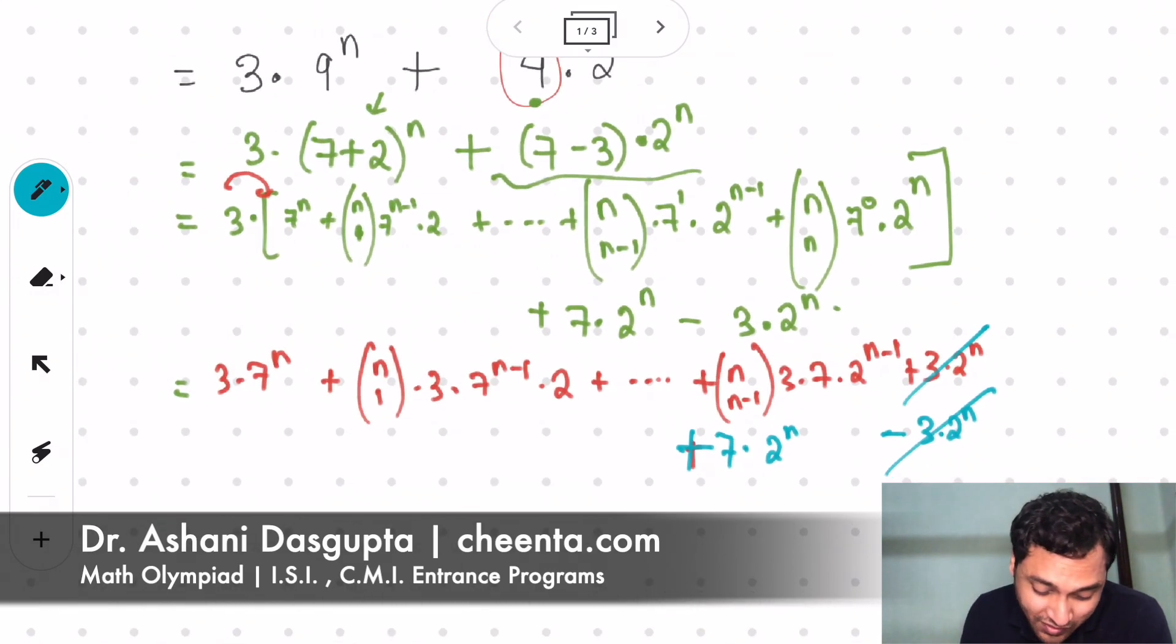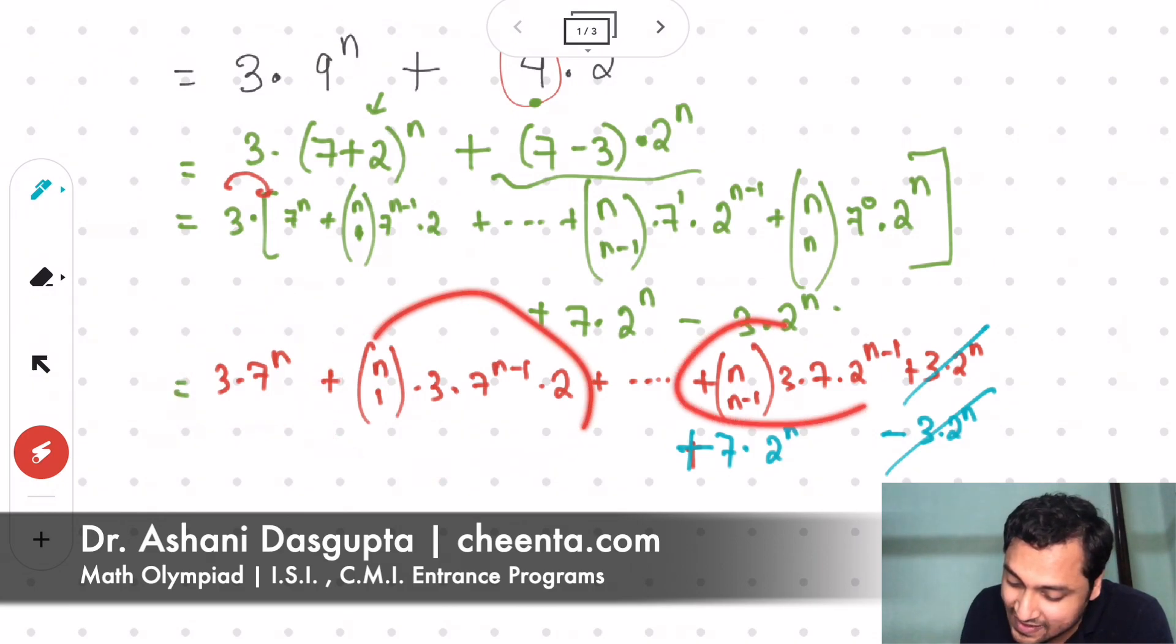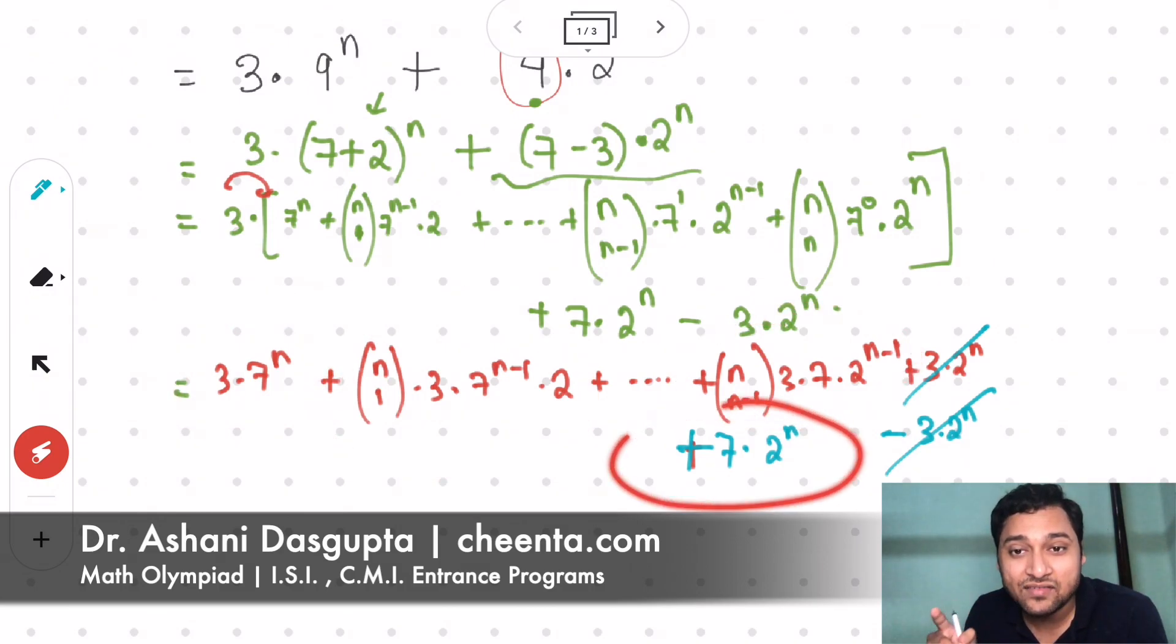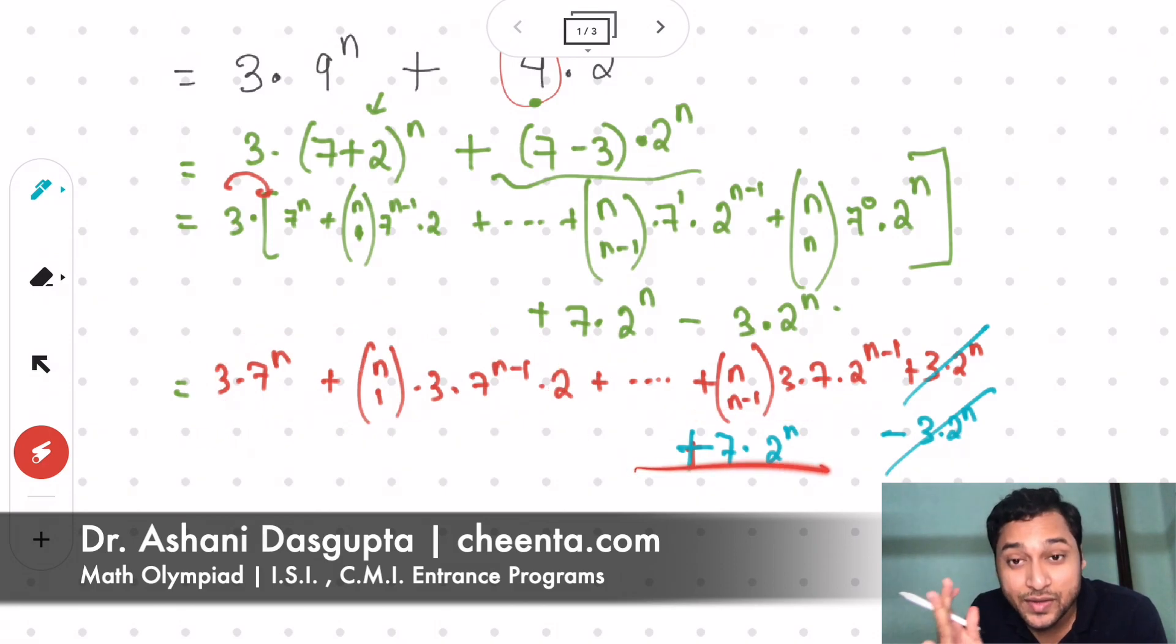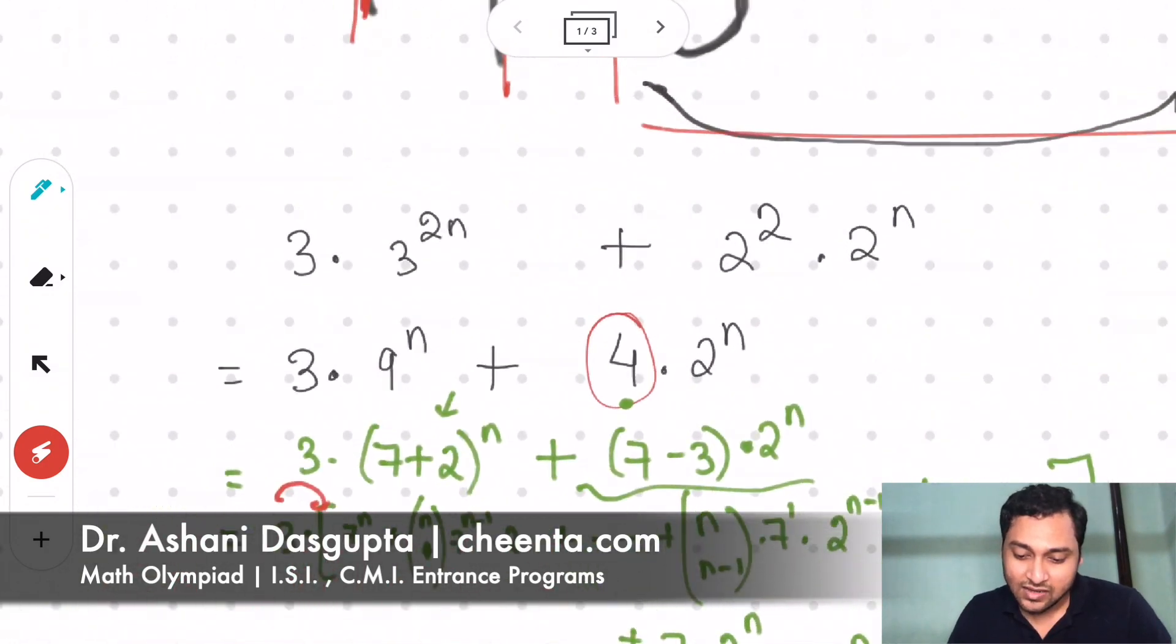The rest of the expressions, each of the remaining pieces, notice they have at least one 7, 7 to the power 1 or more in that expression. So each of these pieces is divisible by 7. We can take a 7 common. So that means the total thing is divisible by 7. That's what we wanted to show, that this expression is divisible by 7.